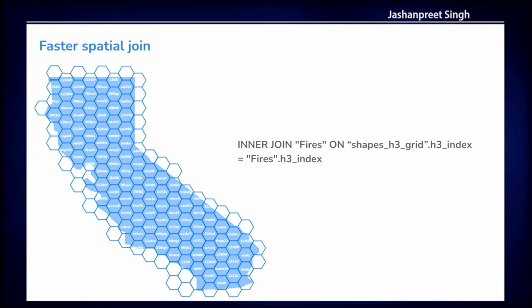We stumbled upon the H3 library by Uber. What we're essentially doing is: take some shape — some country — and divide it into an H3 grid. We polyfill it with all the hex grids that are there, and this hex grid becomes an array representation of the shape itself. A fire point can also be converted to an H3 index. Then it just becomes an array lookup — checking whether a particular fire's H3 index is in the array of the shape's H3 index array. This is considerably faster. The query that was taking over 10 minutes and still running finished within 30 seconds the first time I ran it.